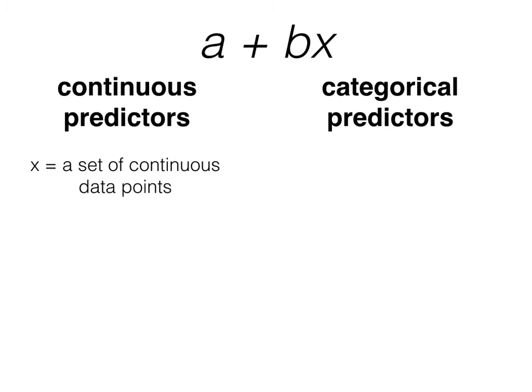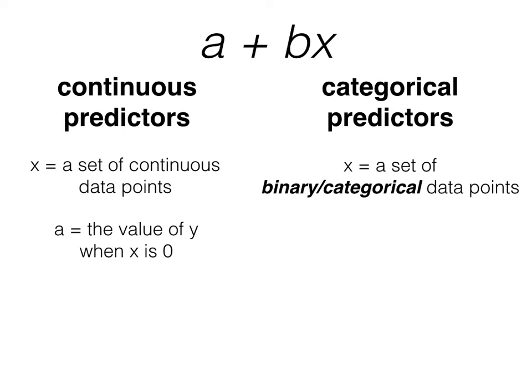For a continuous predictor, x is a set of continuous data points, but for a categorical predictor, x is a set of binary or categorical data points. For a continuous predictor, a is the value of y when x is zero, but for a categorical predictor, a is the value of y when x is the default level of the category.